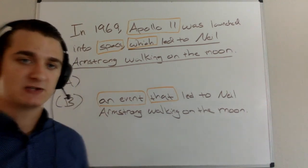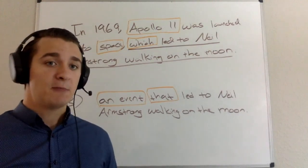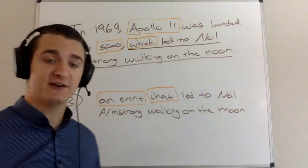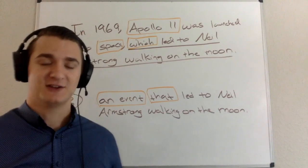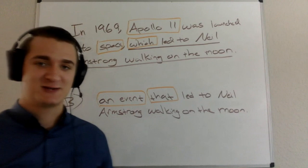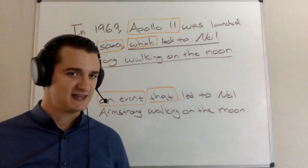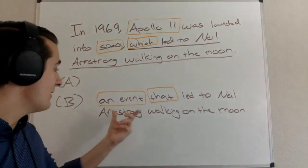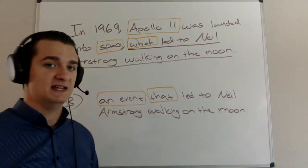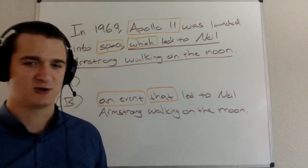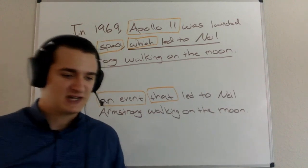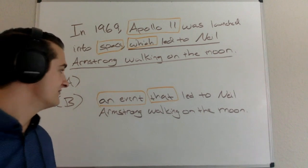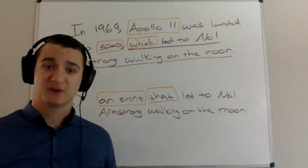I really like this example because, especially if you are a native English speaker, A sounds very good — 'Apollo 11 was launched into space, which led to Neil Armstrong walking on the moon.' I would totally say that in casual conversation. But it doesn't work on the GMAT. Also, I would probably never say what we have in B. That sort of absolute phrase at the end of the sentence sounds very awkward to me.